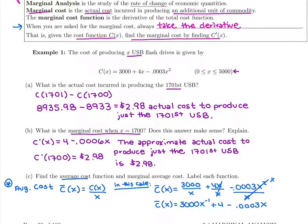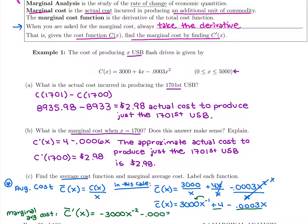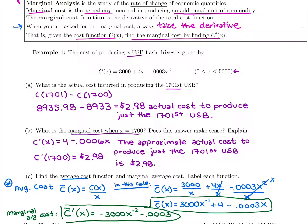Now we find the marginal average cost by taking the derivative of the average cost. C-bar prime of X: bring down the power — 3,000 times negative 1 gives negative 3,000X to the negative 2. The derivative of 4 is 0. The derivative of minus 0.0003X is minus 0.0003. So marginal average cost is negative 3,000X to the negative 2 minus 0.0003. Average means divide total cost by X; marginal means take the derivative.